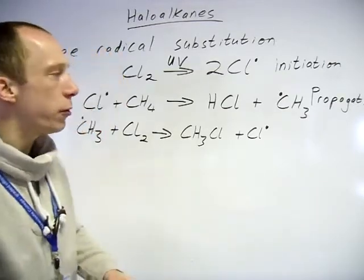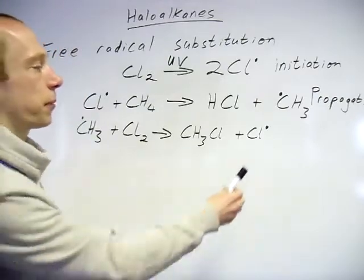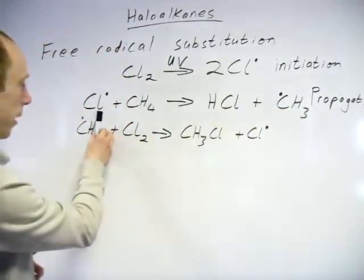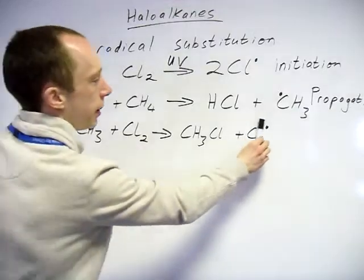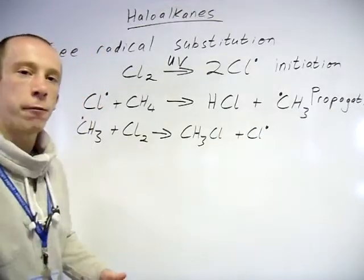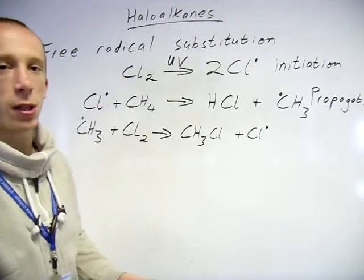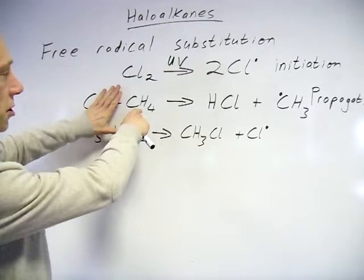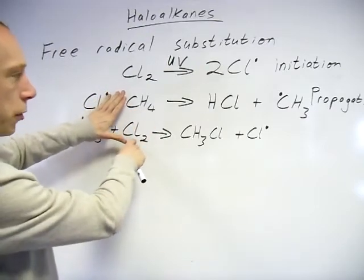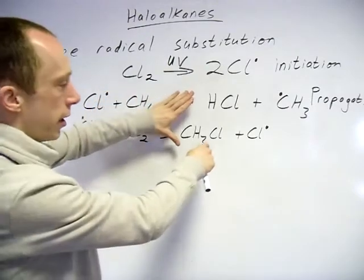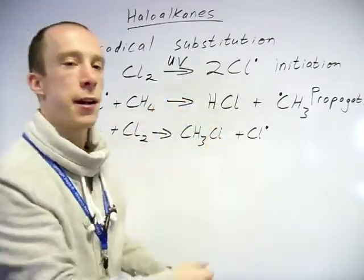The way you know this is: if you look at the radicals, we've got them on both sides, it would cancel out. All you've effectively seen is the methane react with chlorine to give you chloromethane and HCl.